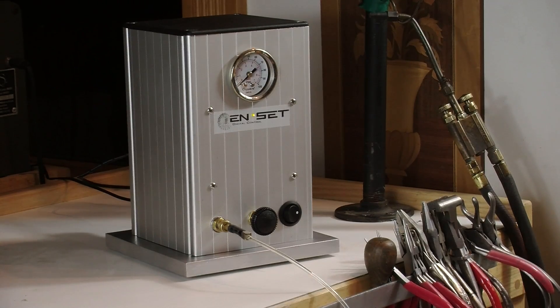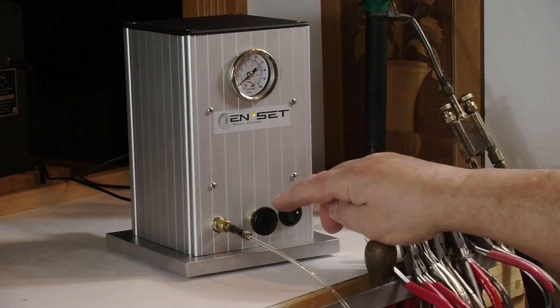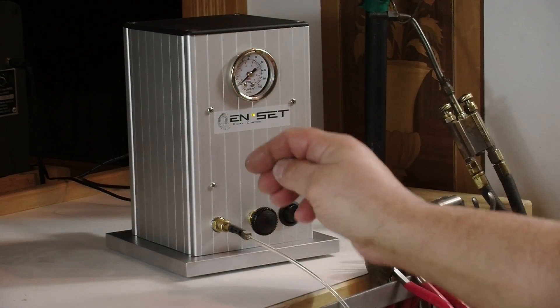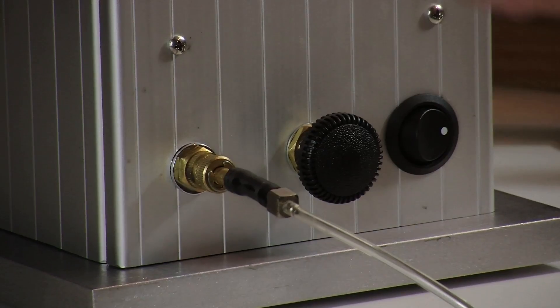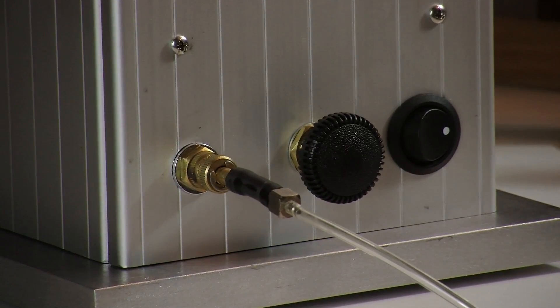The system basically comes as you see here—this is the ENDSET controller. It comes with a precision regulator, which is a quick change, your power supply that's plugged in, and a foot pedal.